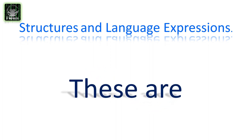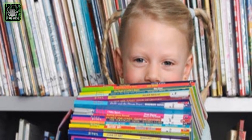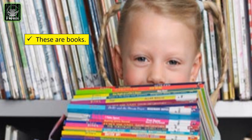Let's learn 'these are' in sentences. We use 'these are' in sentences for plural words — that means when some objects or people are close by. Look at this example: what do you see in this picture? There are many books — more than one, it's a lot of books. It is a plural word. The girl is holding the books; she says 'these are books.' When we have some objects or people close by, we use 'these are' in sentences to introduce them.